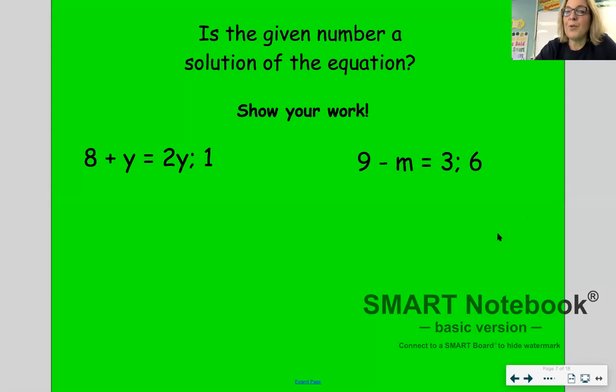So the way that these are presented in our book is that you'll see an equation and then you'll see a colon or semicolon. I can never remember which is which. Behind it with what they're saying the solution is. So in this case, the equation is 8 plus y equals 2y. Then you see the colon and then you see one. So they're asking is one the solution to this equation. So we would remember that what we want to do is we want to replace the variable with whatever the solution is presented.